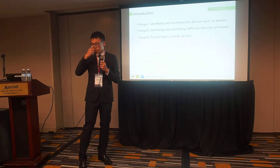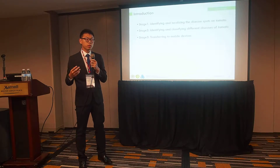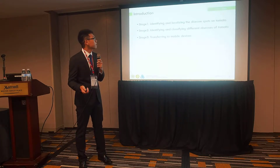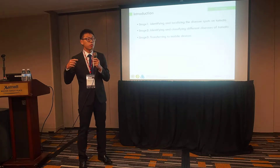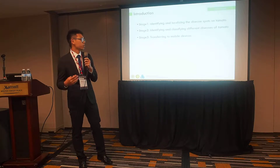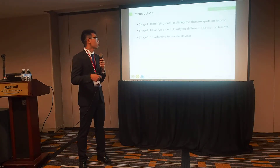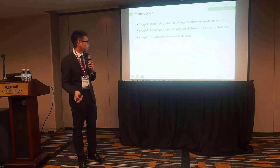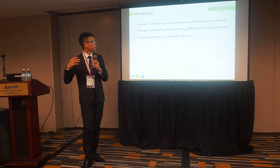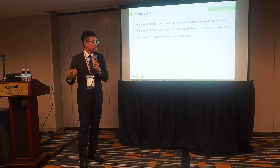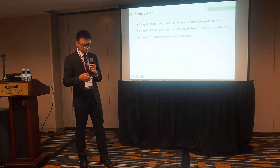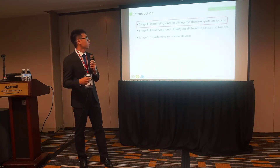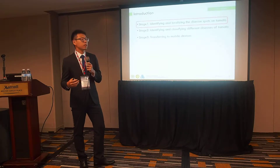There are three stages for us to build this identification system. The first stage, we want to identify and localize the disease spot on late blight tomato. Stage two, we want to identify and classify different diseases of tomato. And the last stage, we hope we can transfer to mobile devices. In this research, we will focus on stage one: identify and localize the disease spot on tomato.